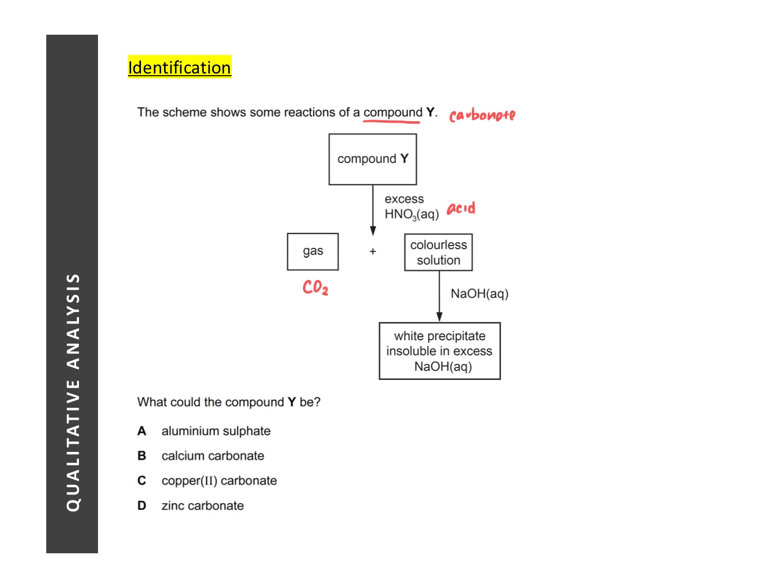And then, how do we know what is the cation present in the carbonate? It is the next part where we have the salt solution and we add sodium hydroxide, we get a white PPT insoluble in excess. In the test for cations, we learn that that means that your calcium ions are present and that would also mean that your compound Y is calcium carbonate.